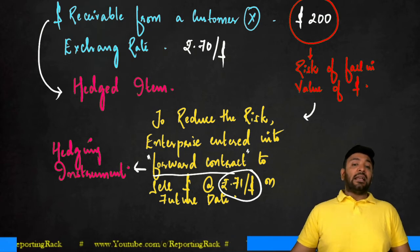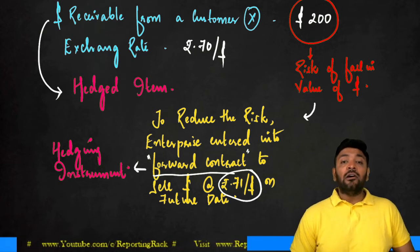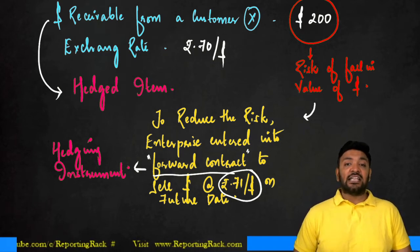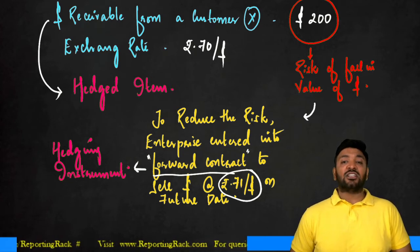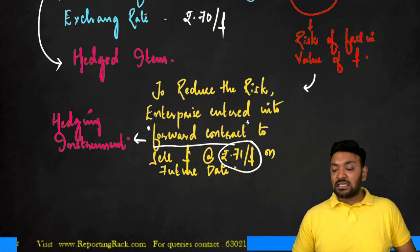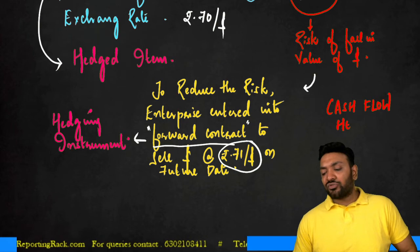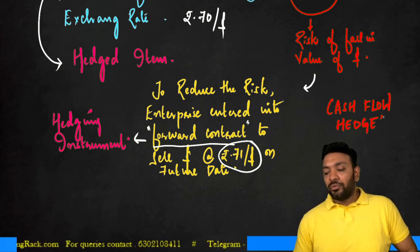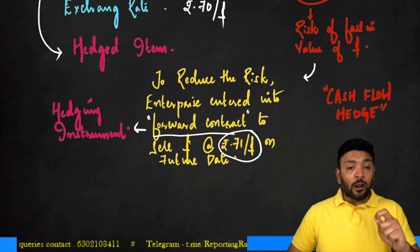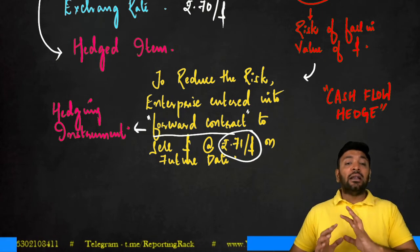If you ask me why I entered into this hedge, I will say: the value of cash flow I derive from the foreign currency dollar receivable is subjected to change because of the change in exchange rate. Therefore this is a risk in cash flow. Since this is a risk in receiving future cash flow, this is called a cash flow hedge. It is called a cash flow hedge because I am trying to hedge the risk of a fall in the value of the dollar, which will affect the cash flows of the company.